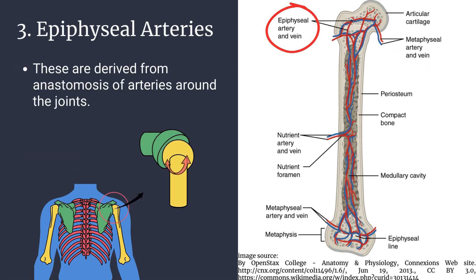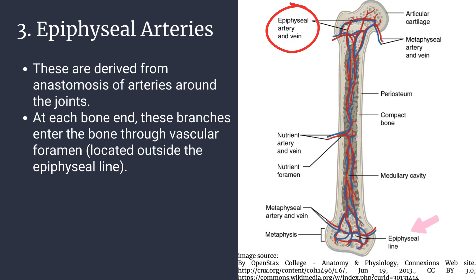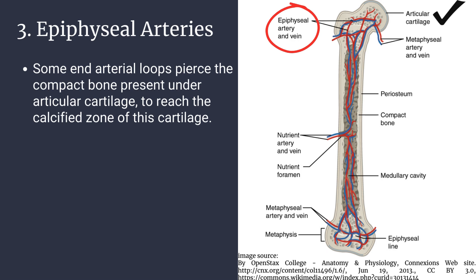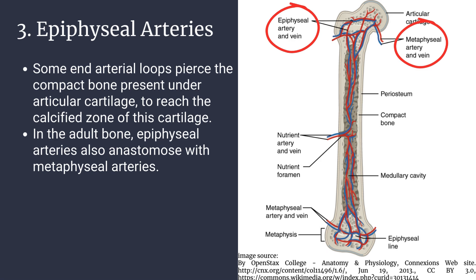Number three: epiphyseal arteries. These are derived from anastomoses of arteries around the joints at each bone end. These branches enter the bone through vascular foramina located outside the epiphyseal line, within the spongy bone of the epiphysis. These arteries branch out to form end arterial loops that drain into epiphyseal venous sinusoids. Some end arterial loops pierce the compact bone under articular cartilage to reach the calcified zone. In adult bone, epiphyseal arteries also anastomose with metaphyseal arteries.